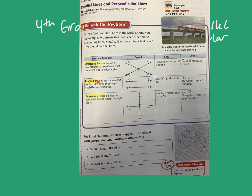Parallel lines are like train tracks. They are lines that will run parallel to each other and never intersect — just side by side, never crossing. Lines in a plane that are always the same distance apart and will never intersect. We would read this as: line DE is parallel to line FG.